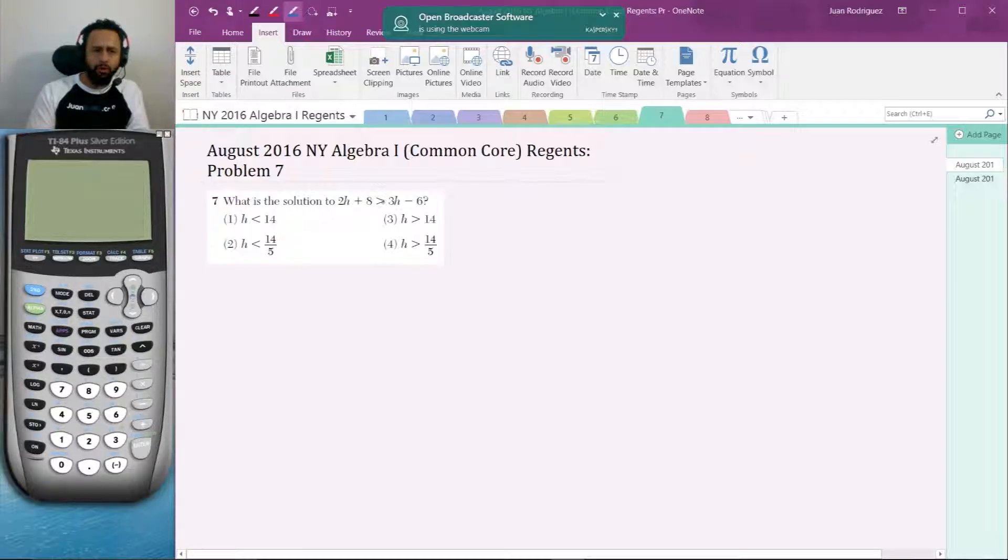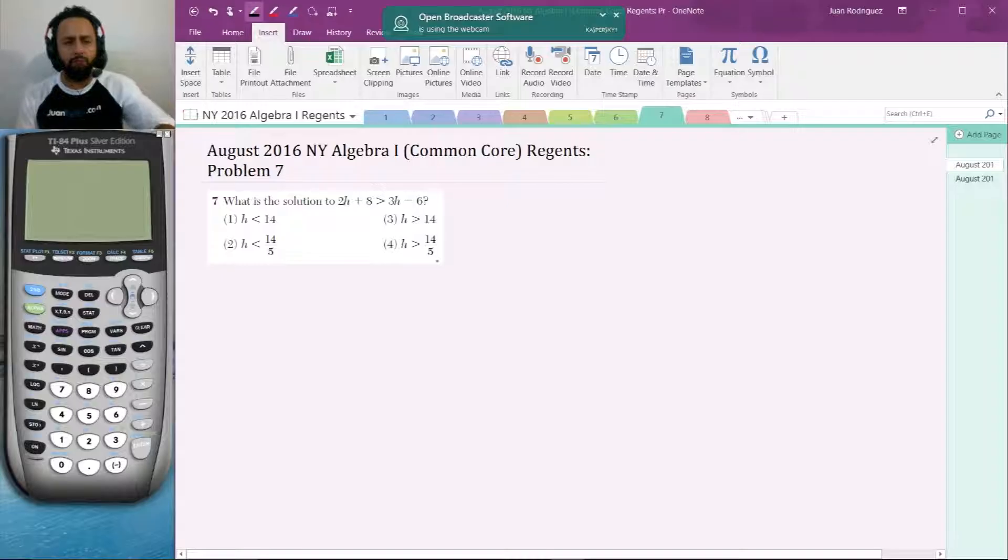What is the solution to 2H plus 8 is greater than 3H minus 6? There are four choices here: H is less than 14, H is greater than 14, H is greater than 14 over 5, and the last choice.